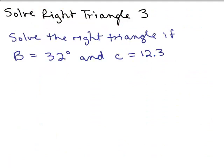This is our third problem, solving a right triangle. I'm not drawing a picture this time. I'm just giving you one of the angles and one of the sides. Solve the right triangle if B, the angle B is 32 degrees and c is 12.3.